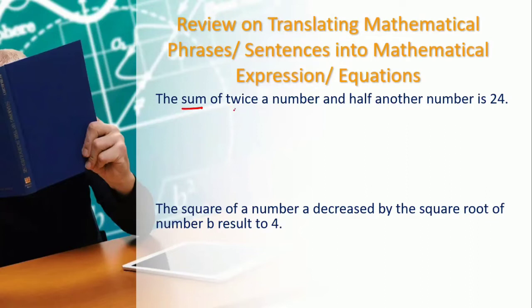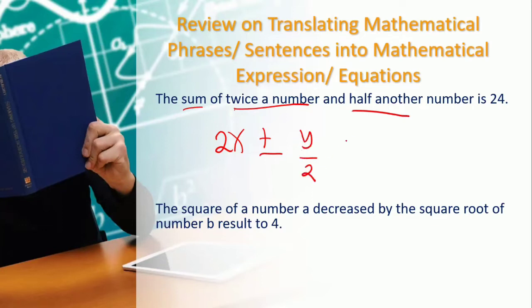So addition is our operation. The sum of twice a number gives us 2x, and half another number gives us y over 2. Then 'is' serves as the equal sign — as you remember from your Grade 7 lesson. So the equation is: 2x + y/2 = 24.